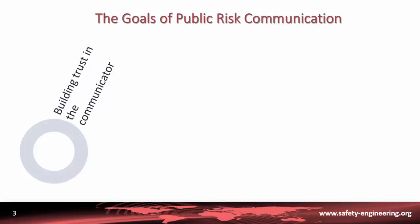The first goal of risk communication can be to build trust in the person who is initiating the communication, which means that your goal can be to build trust in the emitter — be it an institution, a person, an organization, etc. Goal number two can be to raise awareness in the population, to raise awareness in the receiver of the communication message.